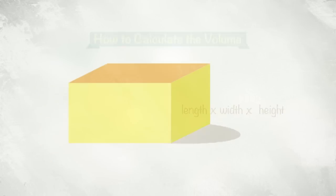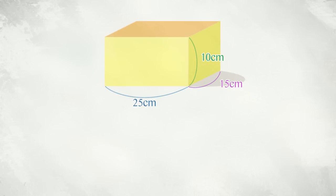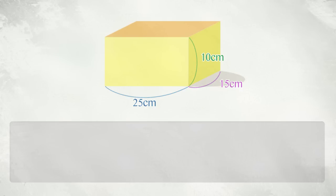For example, let's take a look at this box. The box's dimensions are 25 cm in length, 15 cm in width, and 10 cm in height. To find out the volume of the box, do you remember what you have to do? That's right — all you have to do is multiply all three numbers.